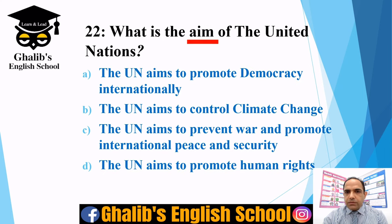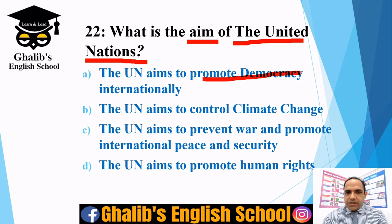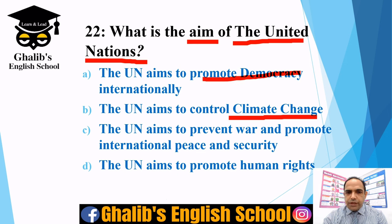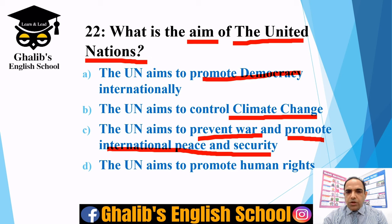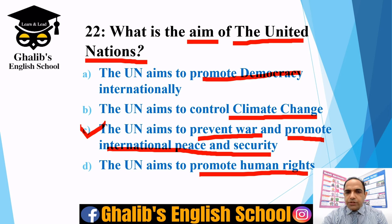Question twenty-two: what is the aim of the United Nations? The options are: to promote democracy internationally, to control climate change, to prevent war and promote international peace and security, or to promote human rights. The correct option is C — the United Nations aims to prevent war and promote international peace and security.